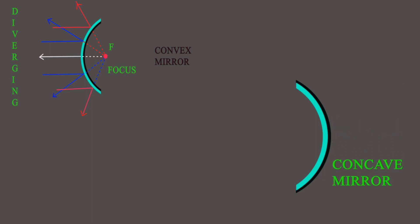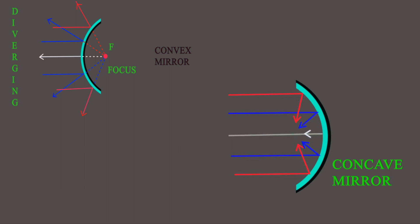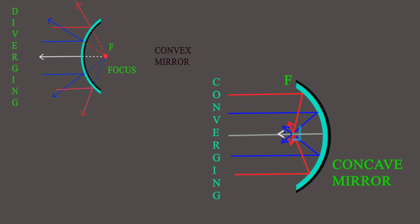This is the concave mirror and this is the principal axis. Light rays come from here and fall on the reflecting surface. Here the reflected rays are actually meeting at a point, and this point is known as the focus, denoted as capital F. This is converging — all the reflected rays meet at a point — so the concave mirror is known as a converging mirror.